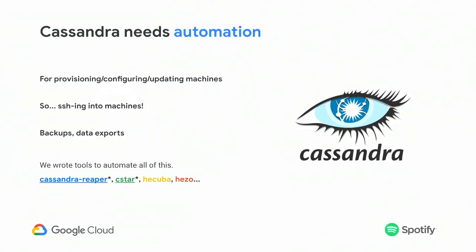C-Star knows, for example, if you want to restart Cassandra, in which order you should do it to avoid having unavailable ranges of data. We also have Cassandra Repair, which is probably the most famous tool we wrote — it handles anti-entropy repairs. We wrote tools for data exports like Hazel, and tools for topology changes. We eventually got to a pretty good spot.